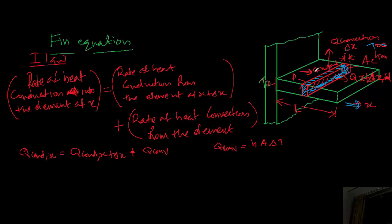For example, if 10 kilojoules of energy are entering this element and 8 kilojoules are leaving by conduction, then the heat transferred by convection will be 2 kilojoules. We apply the conservation principle: Q conducted at X equals Q conducted at X plus delta X, plus Q convected.